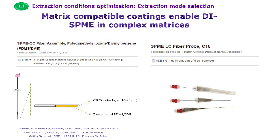We have two types of matrix-compatible or biocompatible extraction phases. One type is for GC, which is the overcoated fiber, and the other type is used for LC applications and is based on polyacrylonitrile — we call it the biocompatible LC fiber probe.